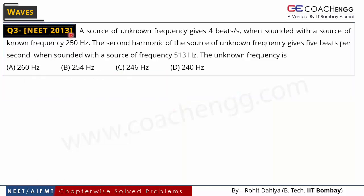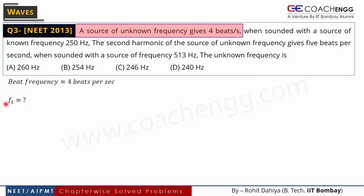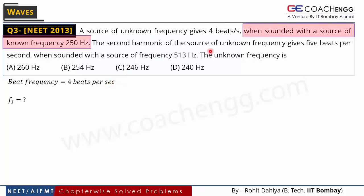Now we discuss the third question from NEET 2013 in the waves topic. A source of unknown frequency gives 4 beats per second. We have a source whose frequency we don't know, and it produces a beat frequency of 4 beats per second when combined with another wave. When two waves of similar frequency add together, beats are produced — alternately soft and loud sounds at fixed time intervals. When sounded with a source of known frequency 250 Hz, the beat frequency is 4 beats per second.